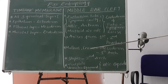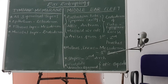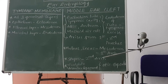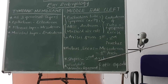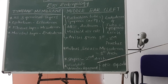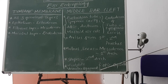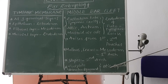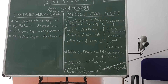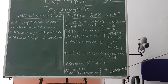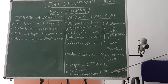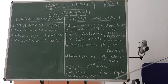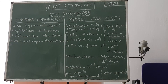The malleus and incus are derived from the mesoderm of the 1st arch, that is Meckel's cartilage. The stapes — except the footplate and annular ligament — is derived from the 2nd arch, that is Reichert's cartilage. The footplate and annular ligament are derived from the otic capsule. These are the important points as far as the exam is concerned. Thank you very much for watching ENT student.